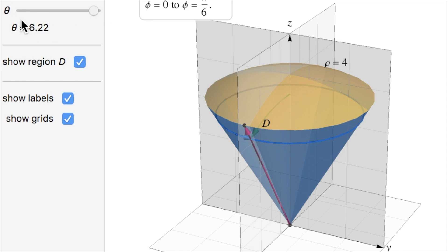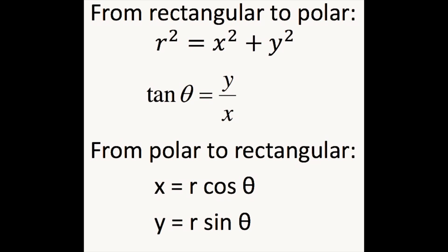Start by understanding how to convert from Cartesian or rectangular coordinates to polar coordinates. Remember that r squared equals x squared plus y squared, tangent theta equals y over x.